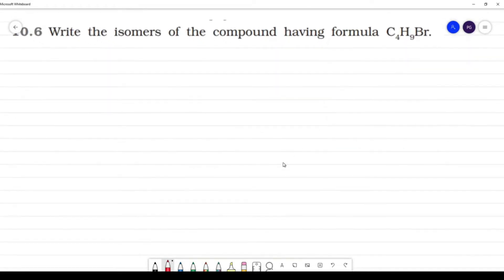Write the isomers of the compound having formula C4H9Br. So first is C4H9Br.